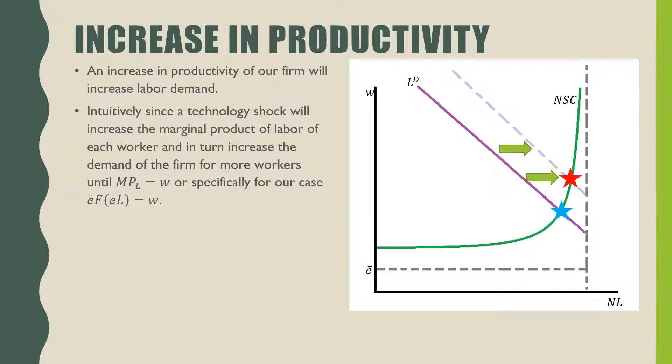An increase in productivity for the firm in this model is actually going to shift out the labor demand curve and move equilibrium from the blue star to the red star. This is because since each worker is paid their marginal product and since this technological shock is going to increase the productivity of each worker, that's going to increase the wage that they can get paid.